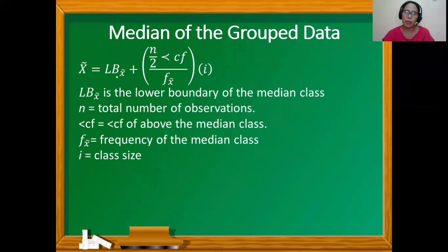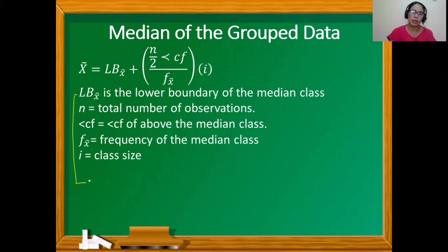We have lb, where lb is the lower boundary of the median class. The lower boundary is equal to the lower limit of the given class interval less 0.5. Take note that we have this median class — later you will know what a median class is.